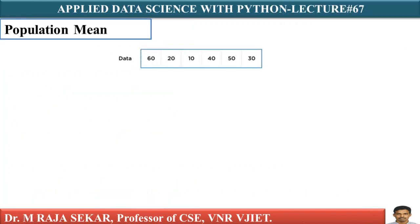Let me say, I have a data set 60, 20, 10, 40, 50, 30. How can I calculate population mean? I already discussed what is population in lecture number 65. Sigma xi by n. There are six elements. I must add these six elements and divide by six. Therefore, my population mean here is 35.